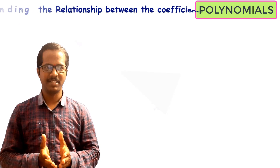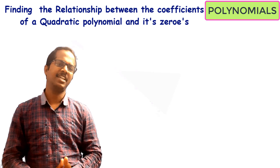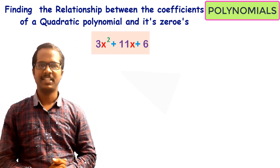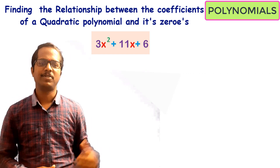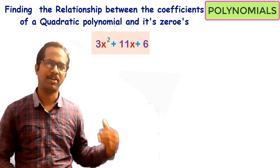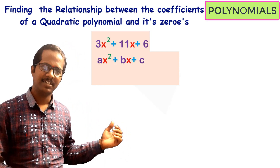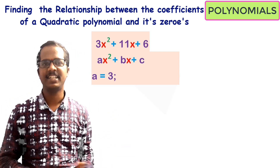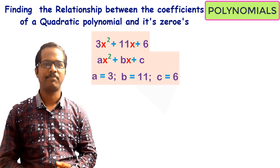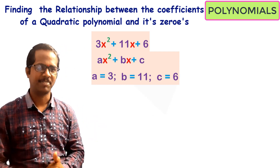For that, let us take one quadratic polynomial: 3x² + 11x + 6. Let us compare this with the general form ax² + bx + c. By comparing, we get a = 3, b = 11, and c = 6. Now let us first find out the zeros of this quadratic polynomial.